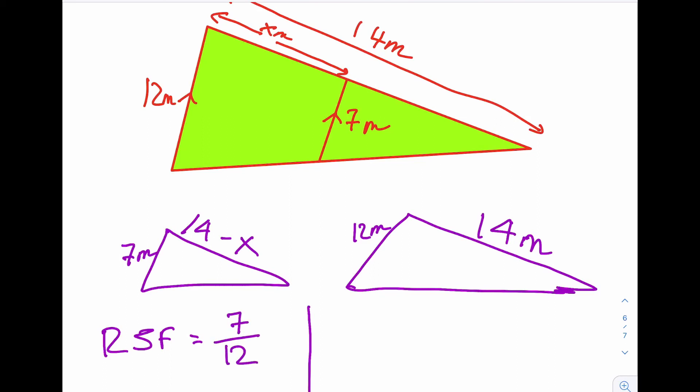we've got a reduction scale factor because we're finding a side in the small shape. So we've got 7 over 12. So that means our missing side, which is called 14 minus X here, instead of just X,